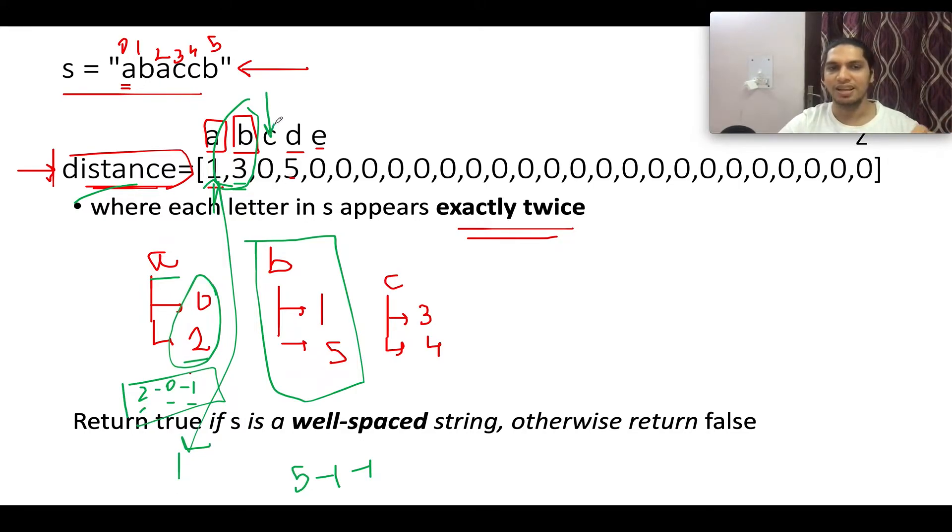Next we have is C. The expected distance between C's should be 0. Let's validate whether it's true or not. So C occurs at two instances, 4 and 3. Let's use the same formula 4 minus 3 minus 1. This gives you 0. That means it's a happy case. The answer turns out to be 0. 0 is equal to 0. Let's proceed ahead.